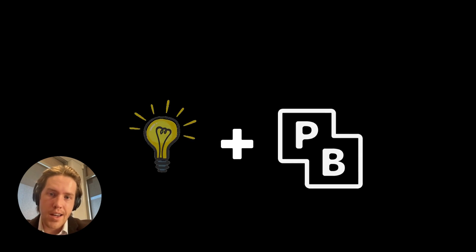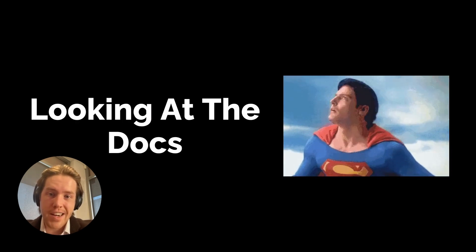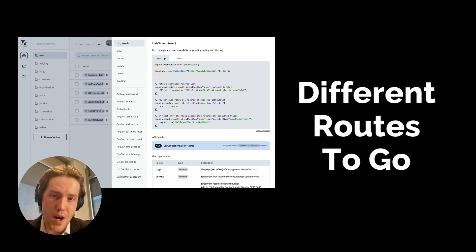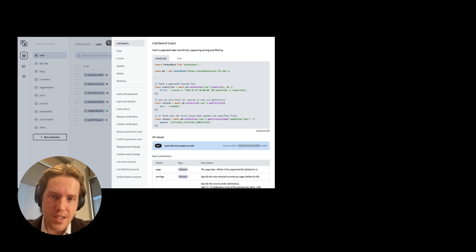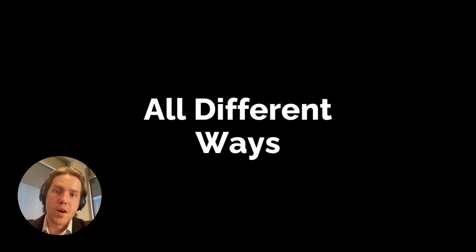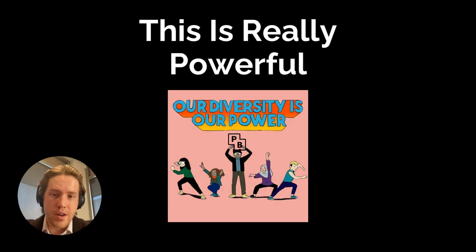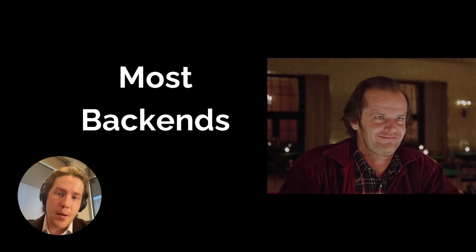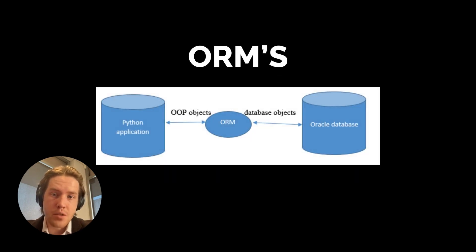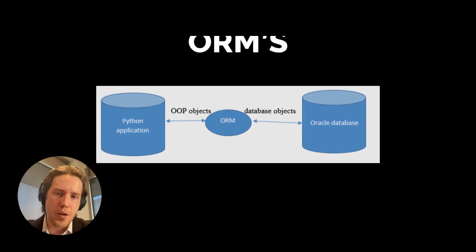As you're looking at the docs, you're going to be able to see all of the different routes, all the ways that you can update, all of the ways that you can authenticate as a user, and all of the different ways that you can search through the data. This is really powerful because most backends don't have this out of the box. There are things called ORMs, or Object Relational Managers, which are basically a wrapper around a database that allow you to do what you get out of the box with PocketBase.